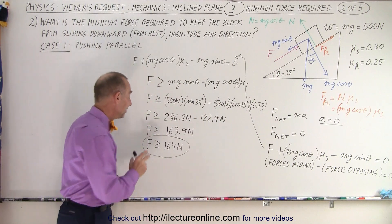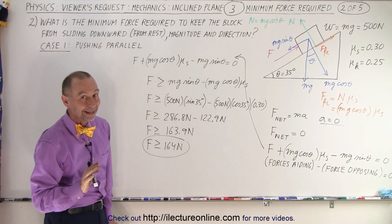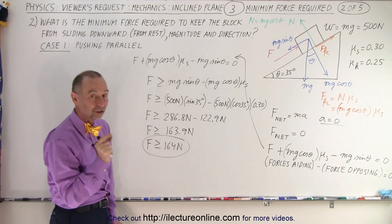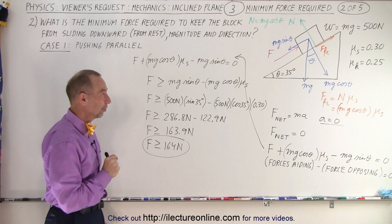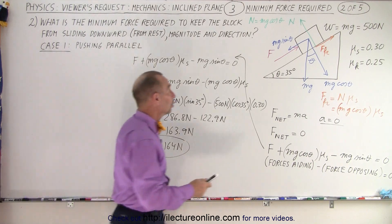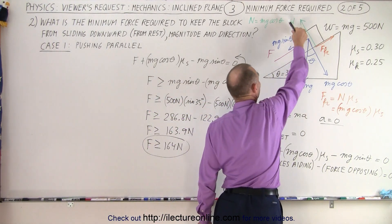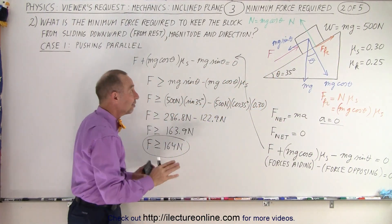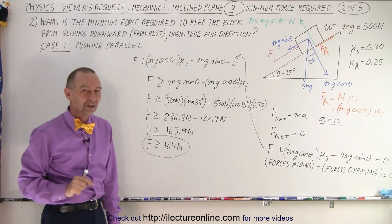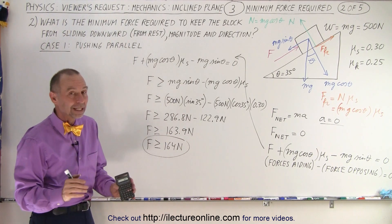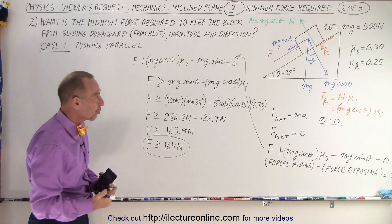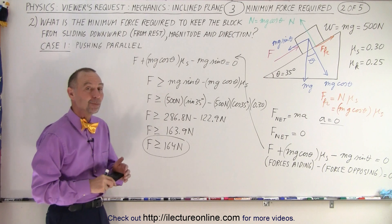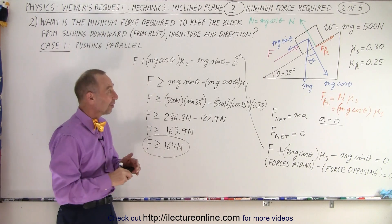Now the question is: is 164 newtons the smallest possible force? I'll give you a hint — it actually isn't. There's another direction we can push that will give us a smaller required force. In the next video, we're going to try putting the force perpendicular to the incline surface, simply pushing the block against the incline to increase the friction force, and see if that requires less force. Ultimately, we'll do the more general approach to find the true minimum force required. Stay tuned.